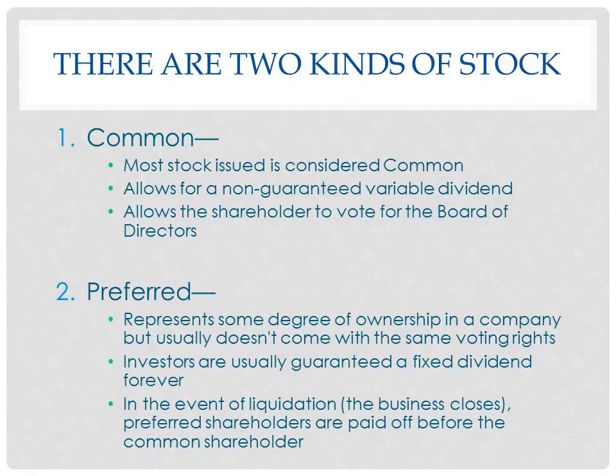There are two kinds of stock. Common stock is the vast majority of stock being issued. It allows for a non-guaranteed variable dividend — meaning you could get it, you might not, it depends on the company. A variable dividend means you might get $1 a share or maybe $5 a share; they don't have to guarantee a certain amount. Common stock also allows the shareholder to vote for the board of directors.